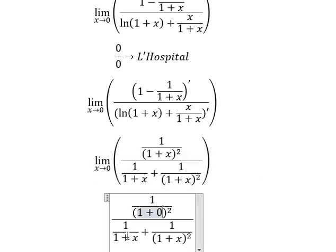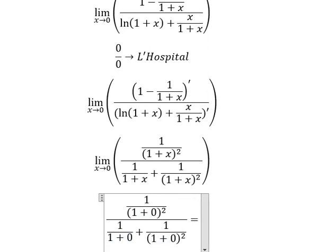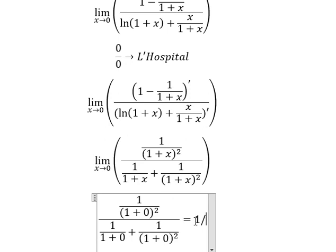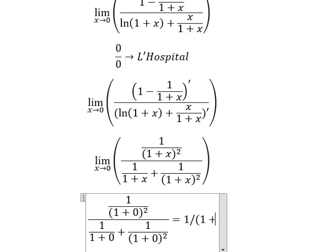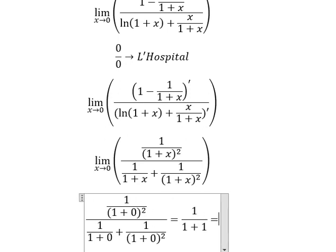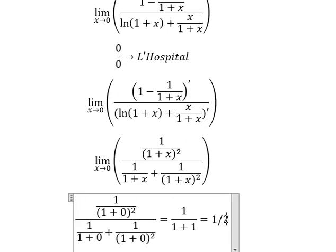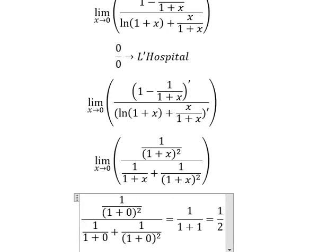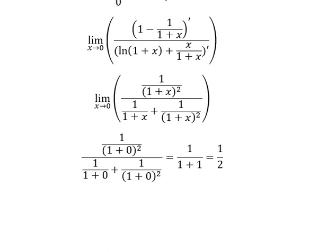When we put zero in here, we evaluate: we have 1 over 1, plus 1 over 1, and 1 over 1 — so we get 1 over 2. The answer is 1/2. This is the end — thank you for watching.